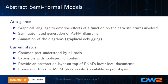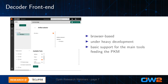Currently, there is a first draft of the ASFM language, which is understood by all tools, with a few extensions specific to some of them, plus conversion tools from documents to ASFM. There is currently a prototype Decoder frontend that is browser-based and should work on any browser — it's under active development. We hope to have a demo in a few weeks. For now, we have basic support for the main analysis tools and NLP tools that can feed the PKM or retrieve documents from it.